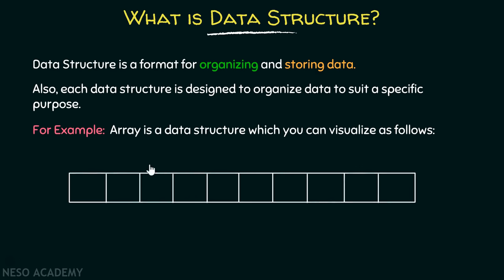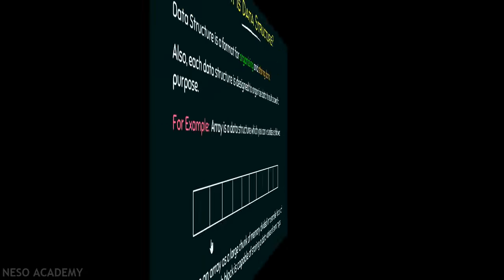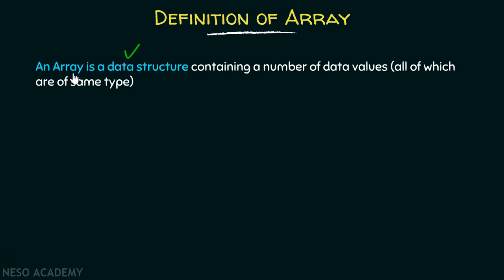An array is a large chunk of memory divided into smaller blocks of memory. Each block is capable of storing a data value of some type. It's a data structure because here you are storing data and all the data is organized in a sequential manner. That is why an array is a data structure — in each block you can store some data, and all of them are organized sequentially.